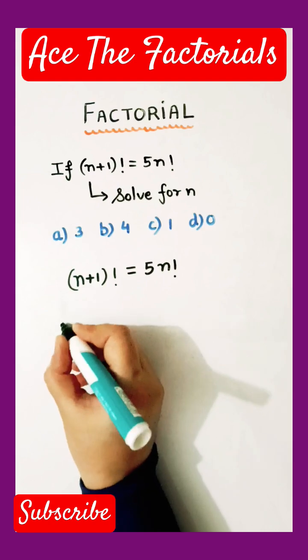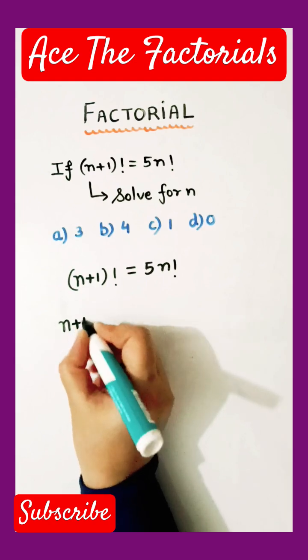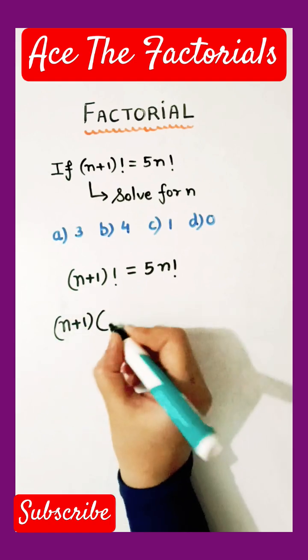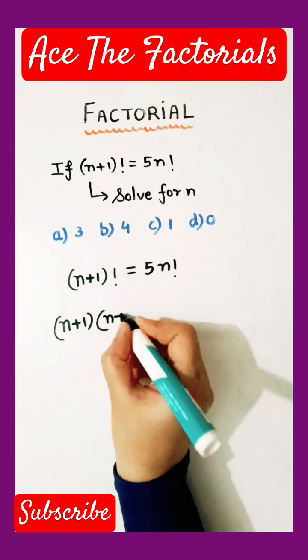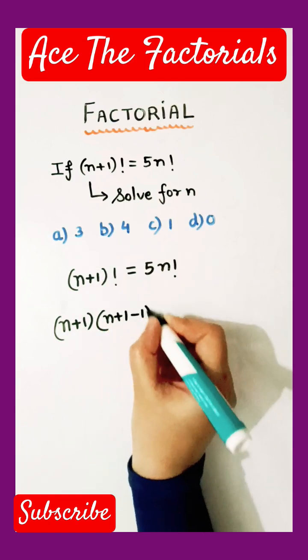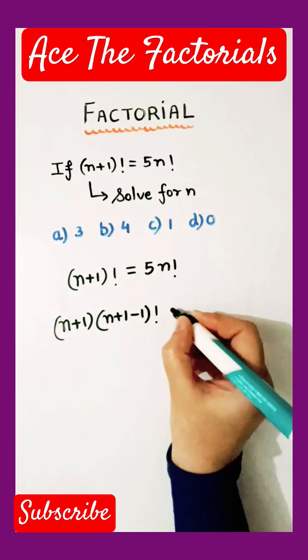Applying the formula of factorial, n plus 1 in one bracket, and then the same term minus 1, which gives us n, and factorial is here.